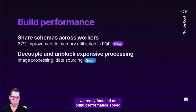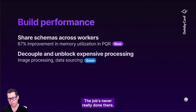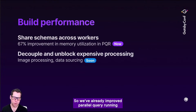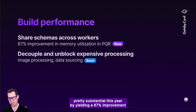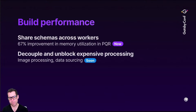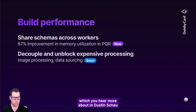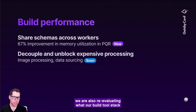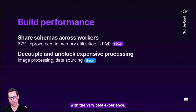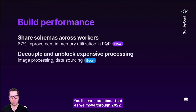We also have ES module support coming soon within Gatsby. We want to make sure that local development is more consistent with production behavior, so that you know if it worked on your machine, it'll work for your visitors. In 2021 we really focused on build performance speed and scale. We've already improved parallel query running pretty substantially this year, yielding a 67% improvement in memory utilization. We're also incorporating unique ways to reduce time required to process images for your site, and we are reevaluating what our build tool stack really needs to be.